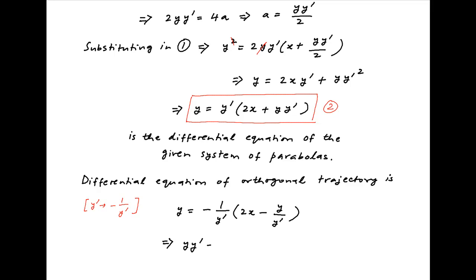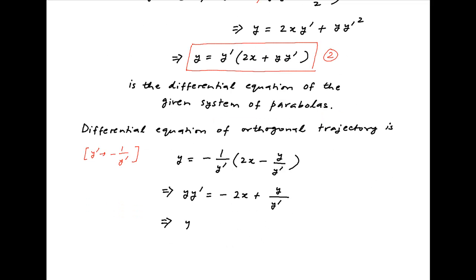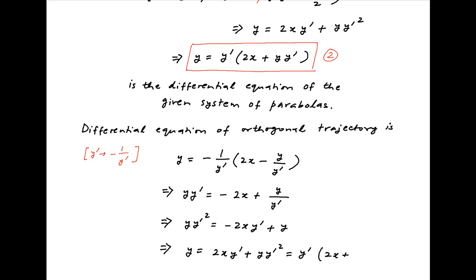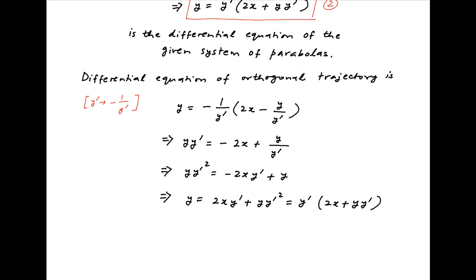Cross multiplying, we get y·y' = −2x + y/y'. This implies that y·(y')² = −2x·y' + y, and therefore y = 2x·y' + y·(y')², which can be written as y = y'·(2x + y·y').